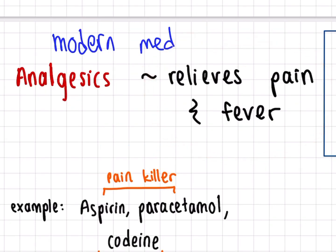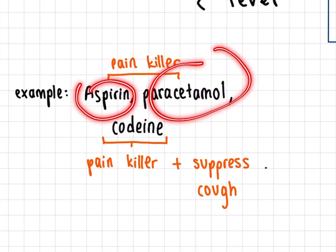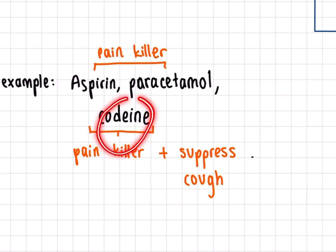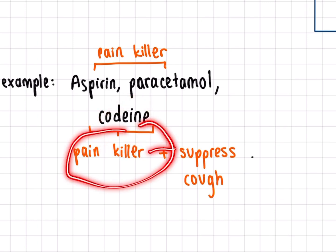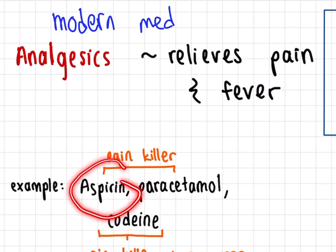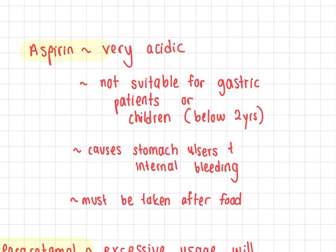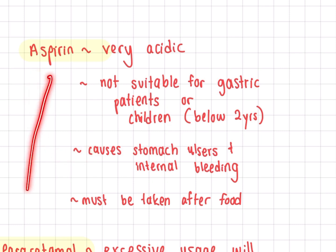Analgesics are used to relieve pain and fever. Examples include aspirin, paracetamol, and codeine. Codeine is a painkiller that also suppresses cough. Note that aspirin is very acidic, so it is not suitable for people who have gastric problems or patients below two years old, as it causes stomach ulcers and internal bleeding. It must be taken after food.